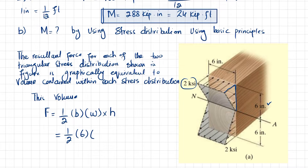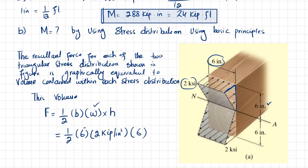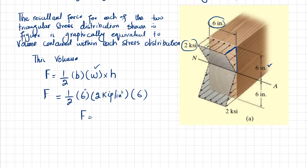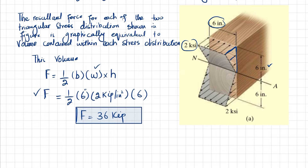So the force equals (1/2) × 6 inch × 2 kips per inch² × 6 inch. When you calculate it, the volume — which equals the force — is 36 kips. We have converted the triangular volume into a force of 36 kips using this formula.